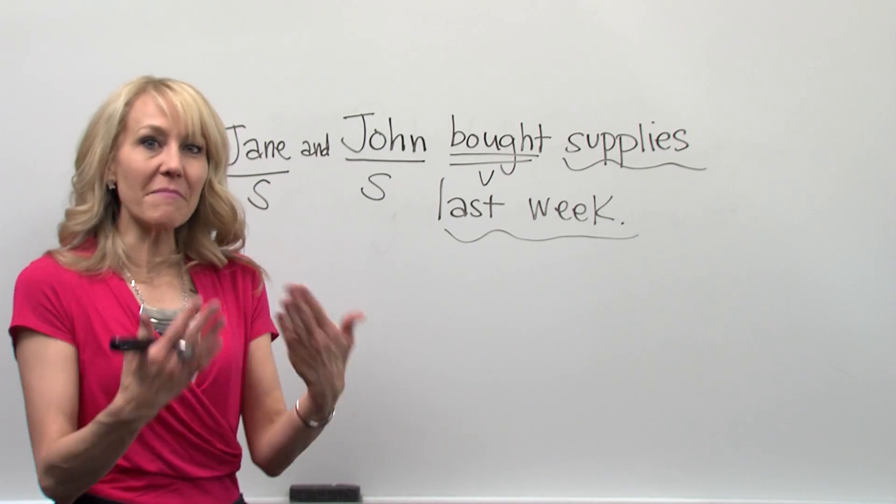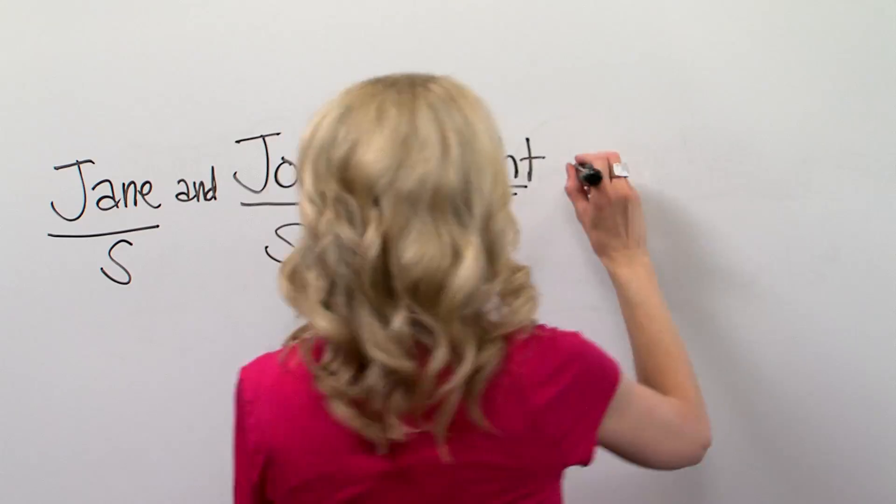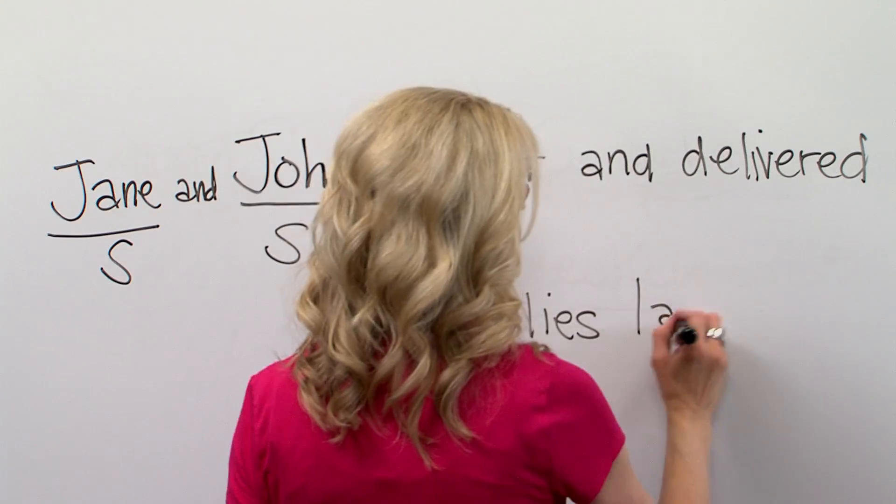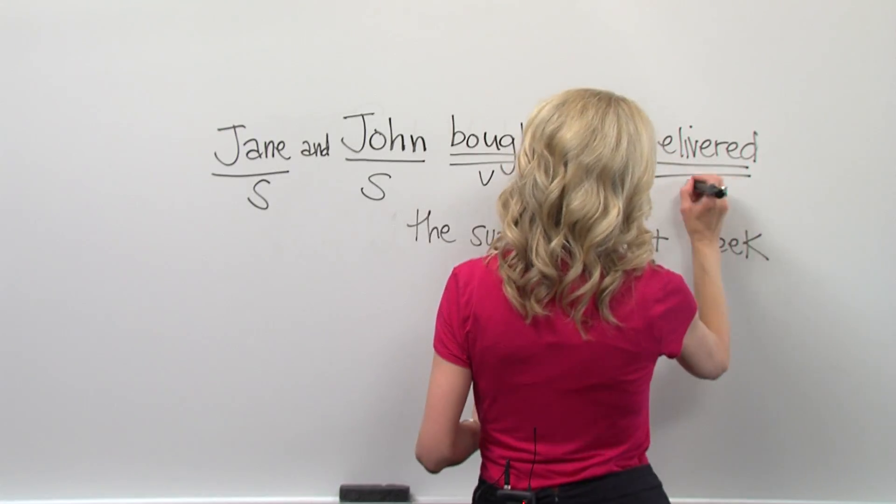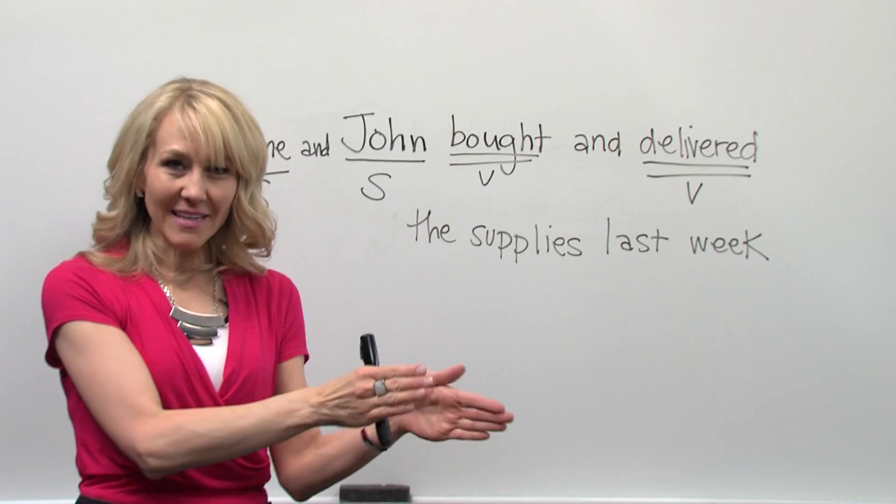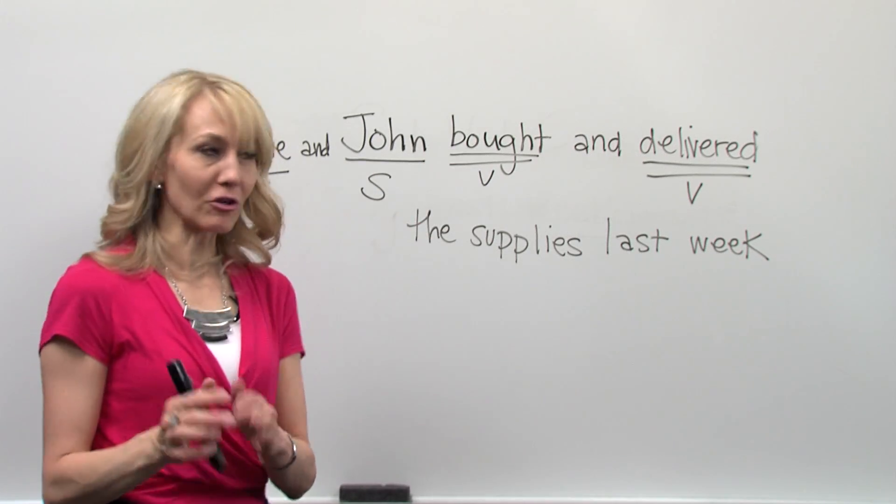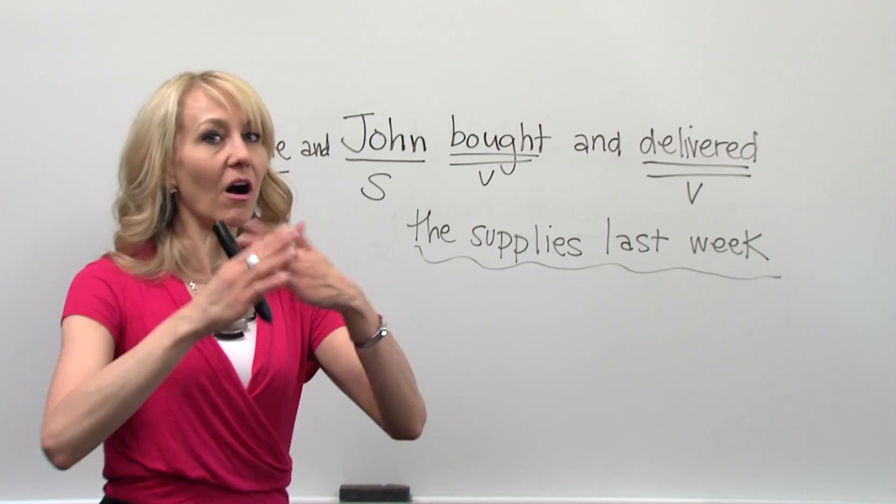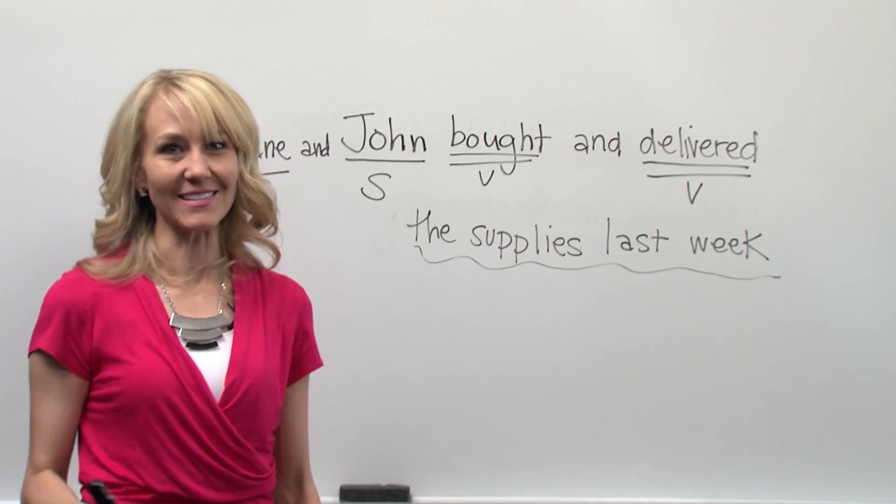We might add in a secondary main verb. So now I've underlined both of my main subjects and both of my main verbs, and I'll put the squiggly line under all of the complementary information in the sentence.